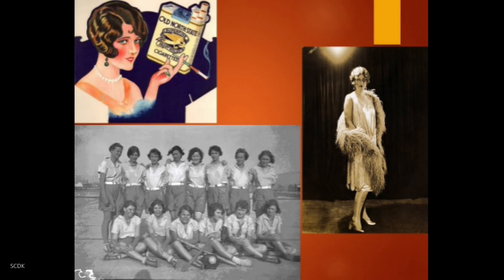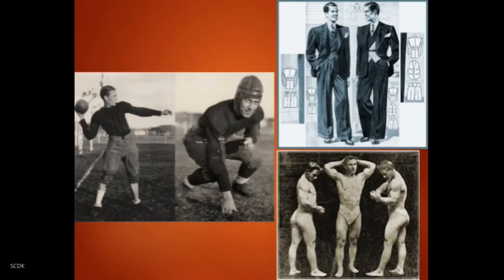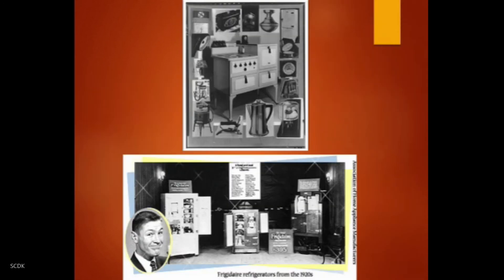As for the men, these images give a sense of the fashions of the day. The picture on the left shows the state of a typical football uniform at that time — not even a face mask on the helmet, just a leather cap. The pictures on the right give a sense of what the male physique and what businessmen were expected to wear during that time. This is also a time of great invention, with many new electronic appliances coming on the scene, making tasks in the home much easier and more efficient.